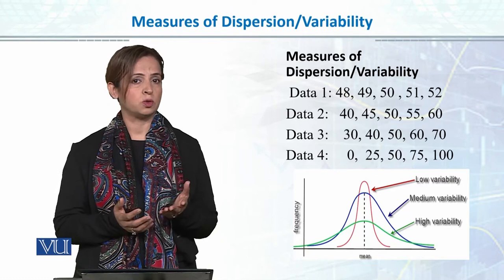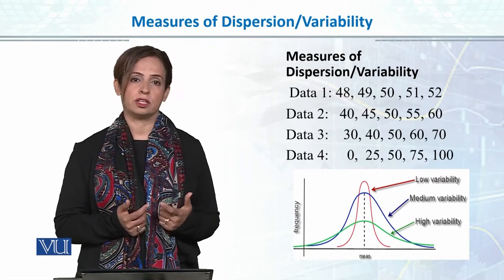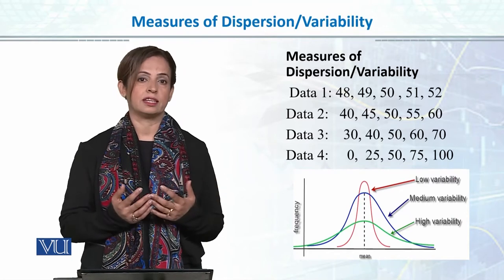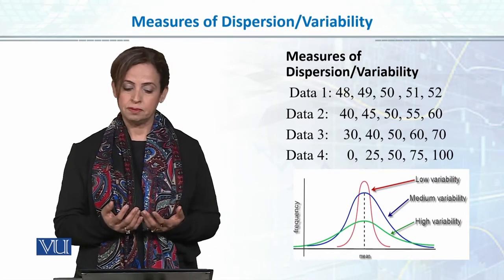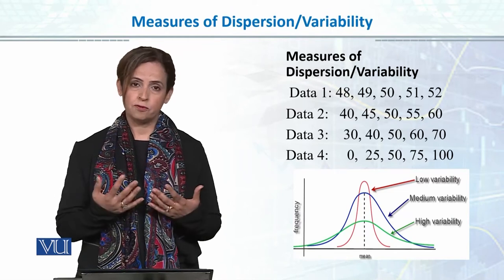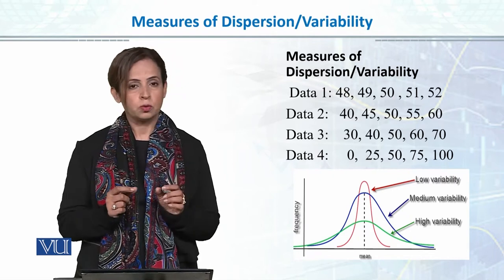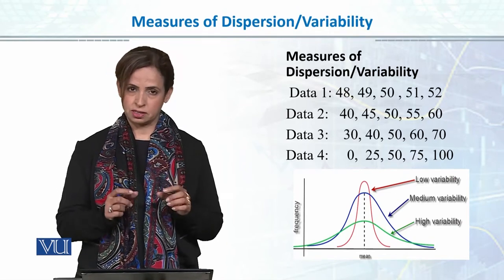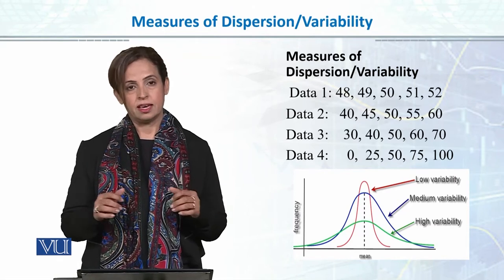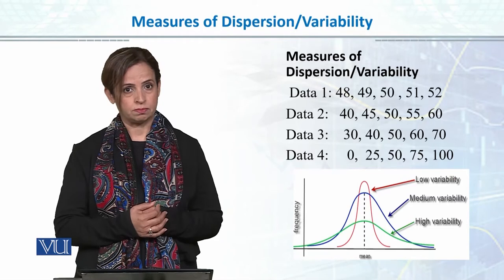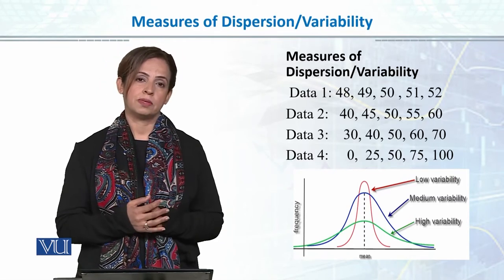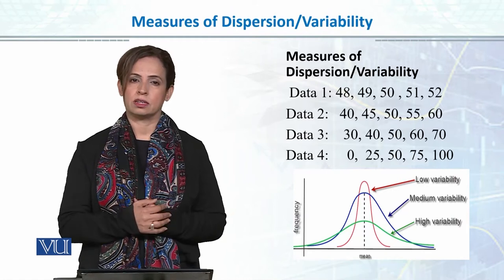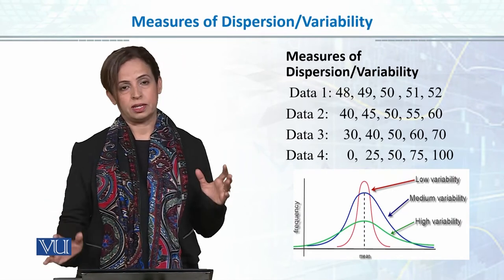If I'm telling somebody how students performed and just saying the mean is 50, it's not enough. I need to tell something about the spread of scores or dispersion in the data. In the first data set, the variability is very low — all students scored between 48 and 52. In data two, variability is increasing, and similarly in data three and four. So it is important to know about the spread of scores in the data.